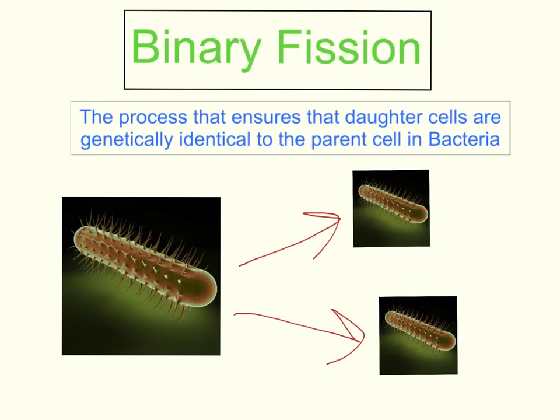from this parent cell is going to be copied and passed on in an exact manner so that you get an identical copy in each of the two daughter cells. And that process is called binary fission.